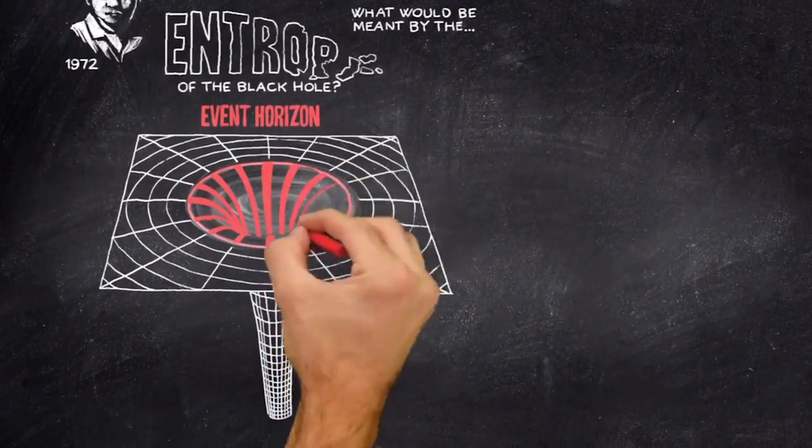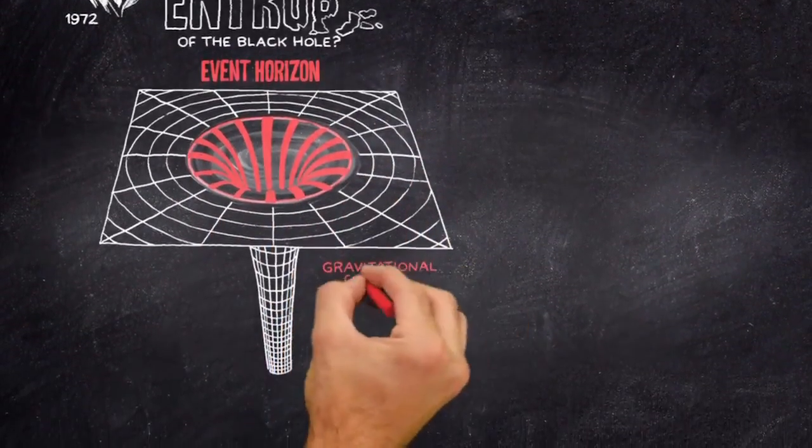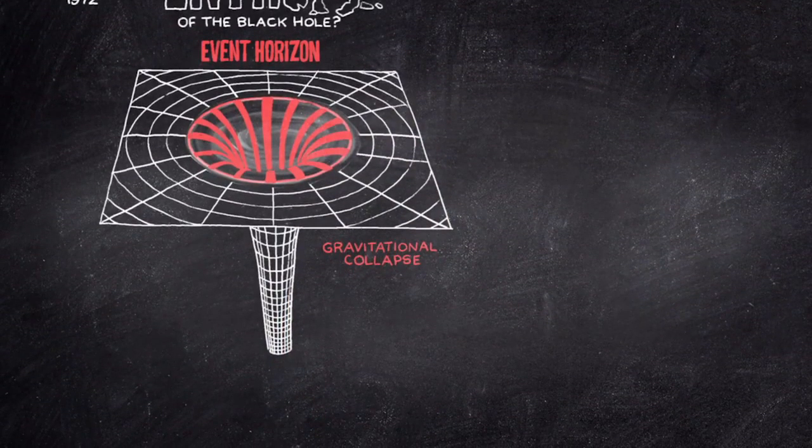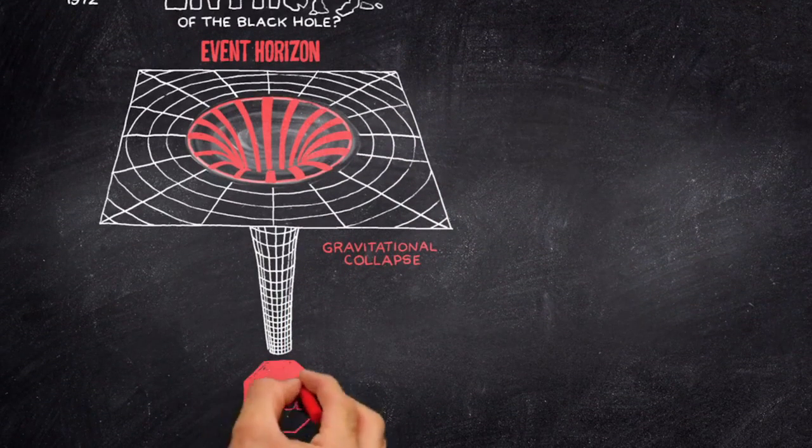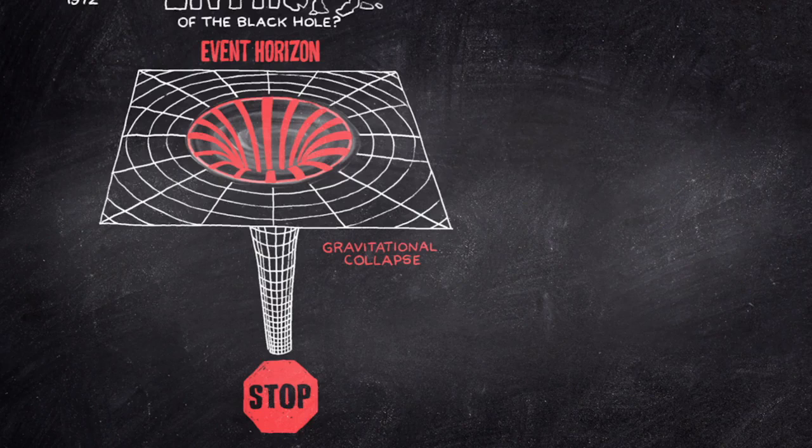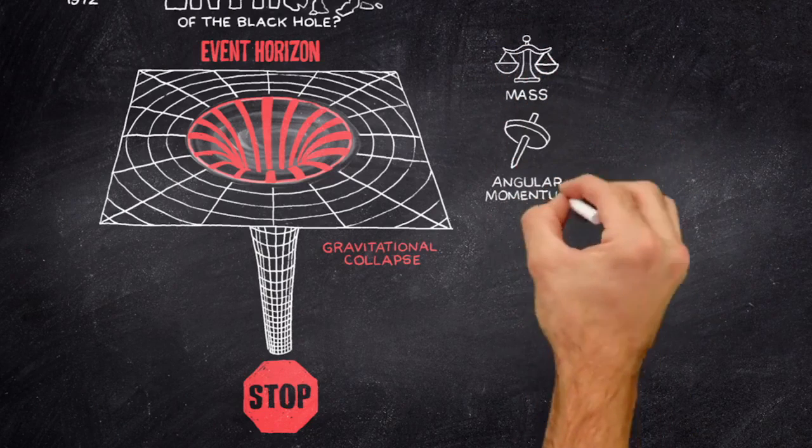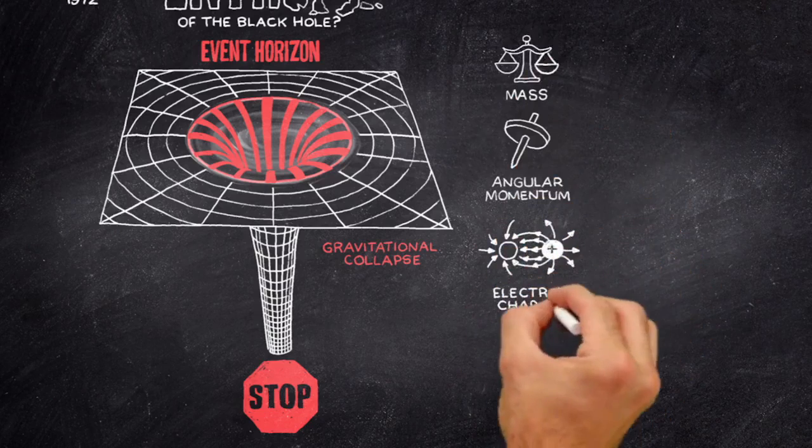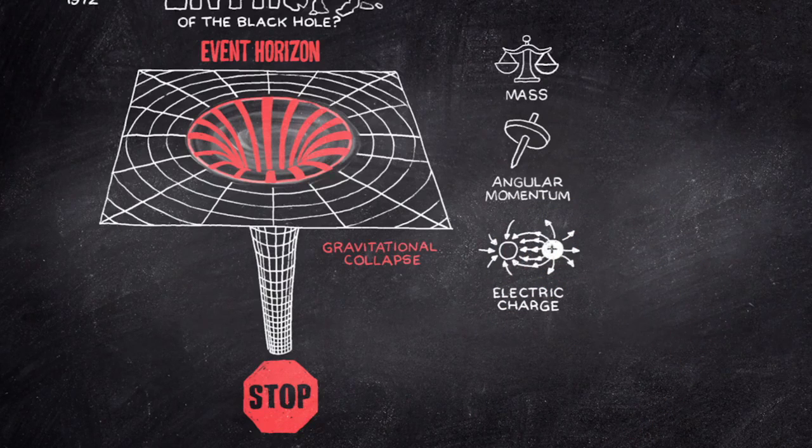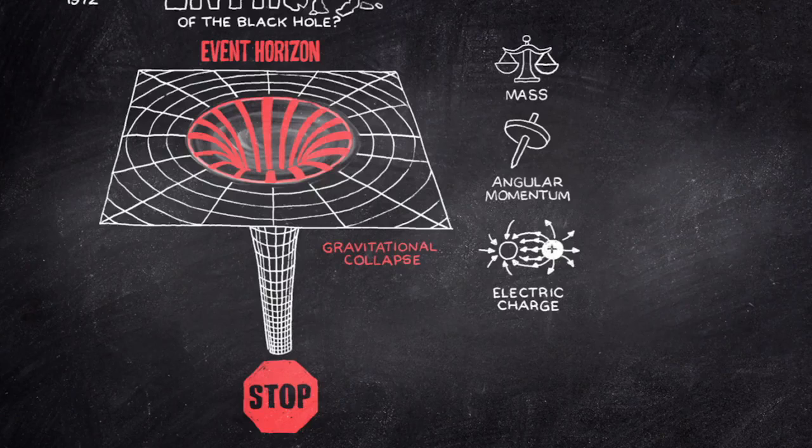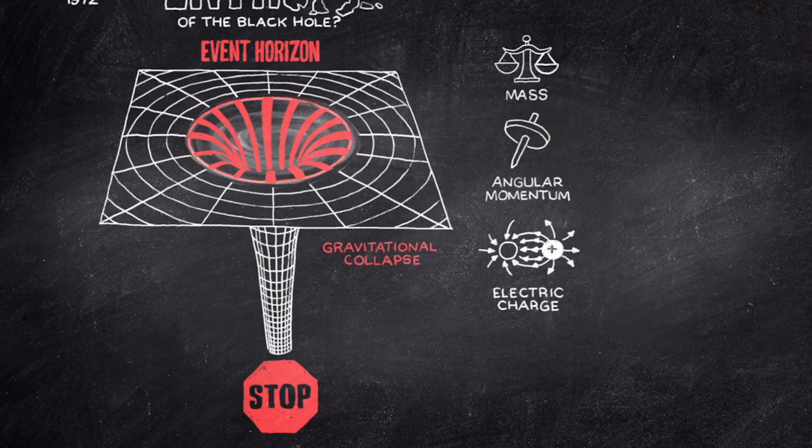When a black hole is created by gravitational collapse, it rapidly settles down to a stationary state which is characterized by only three parameters: the mass, the angular momentum, and the electric charge. Apart from these three properties, the black hole preserves no other details of the object that collapsed.